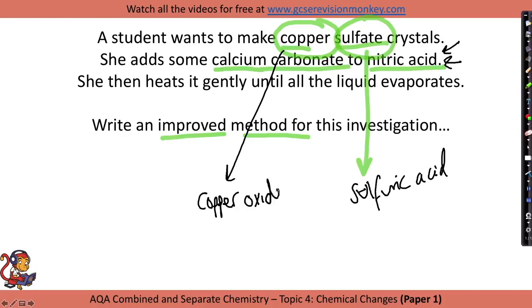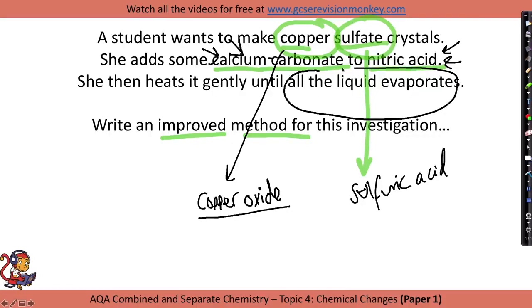You could use copper oxide, copper hydroxide, or copper carbonate — anything that makes copper sulfate would get the marks. They've also wrongly used calcium carbonate. The other mistake is saying to heat it until all the liquid evaporates. You need to filter it before you do that, so you'd discuss how to set up filter paper in the funnel and the conical flask, and then talk about not evaporating all the water but leaving it to evaporate slowly at the end. Look out for that kind of question in the exam.